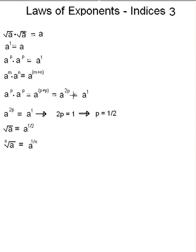So a to the 2p is equal to a to the 1. So we have this equation here. a to the 2p is equal to a to the 1, and this leads us to the equation that 2p equals 1. Because we have some number to the p power, the same number to the first power. So 2p must equal 1.